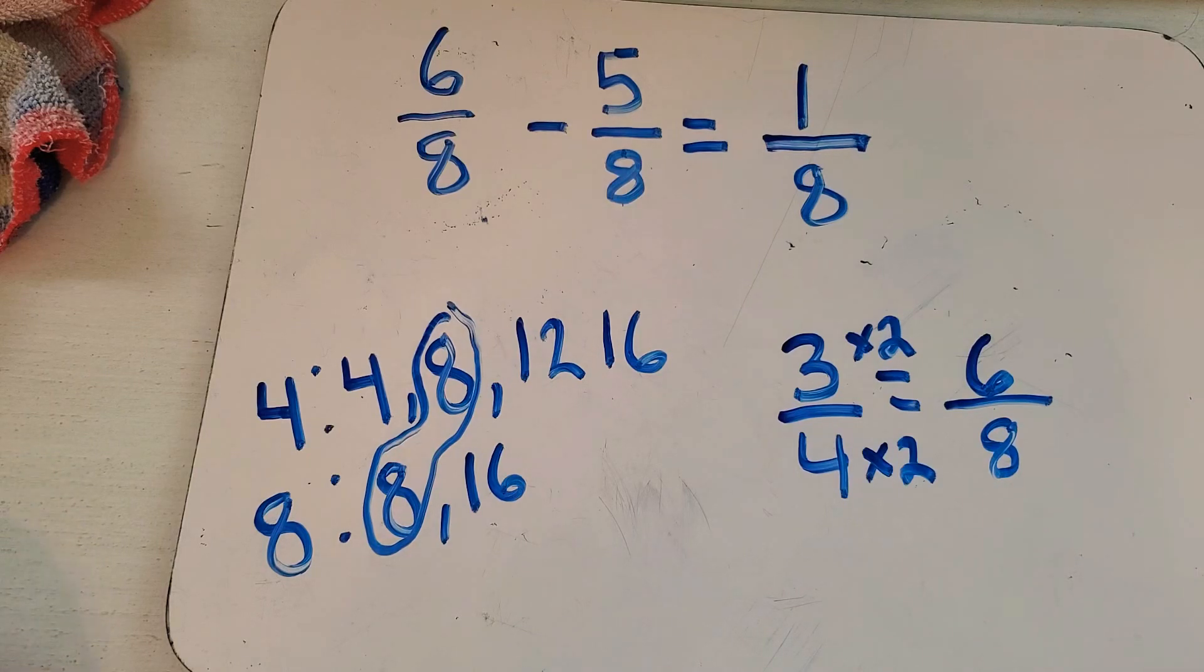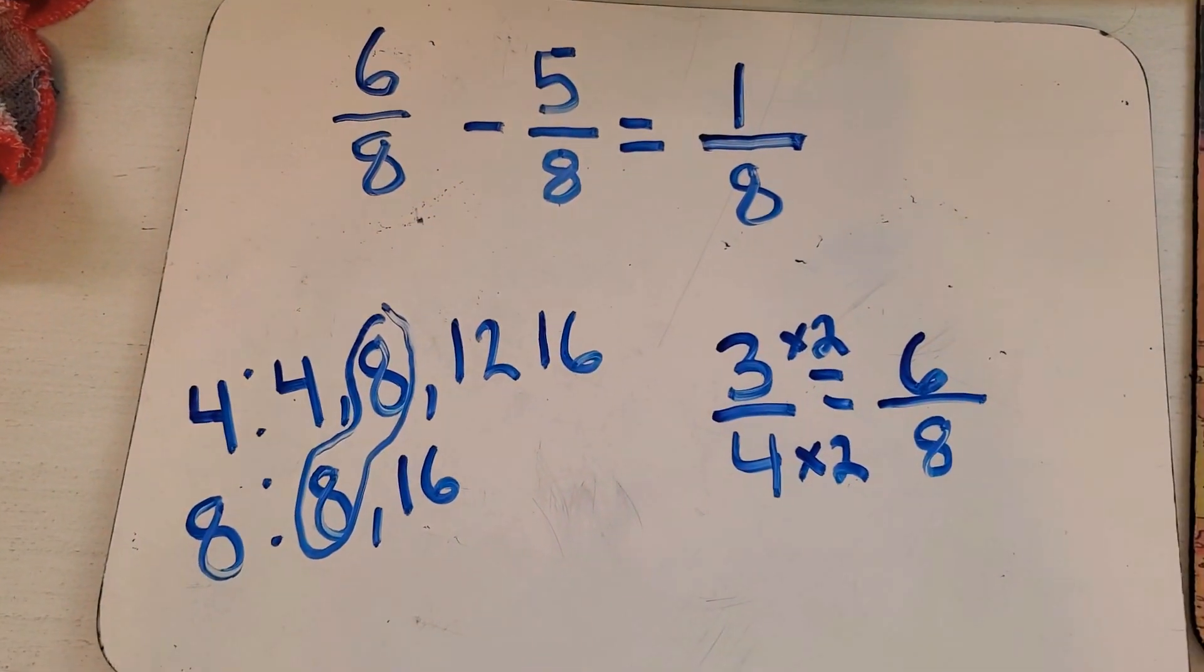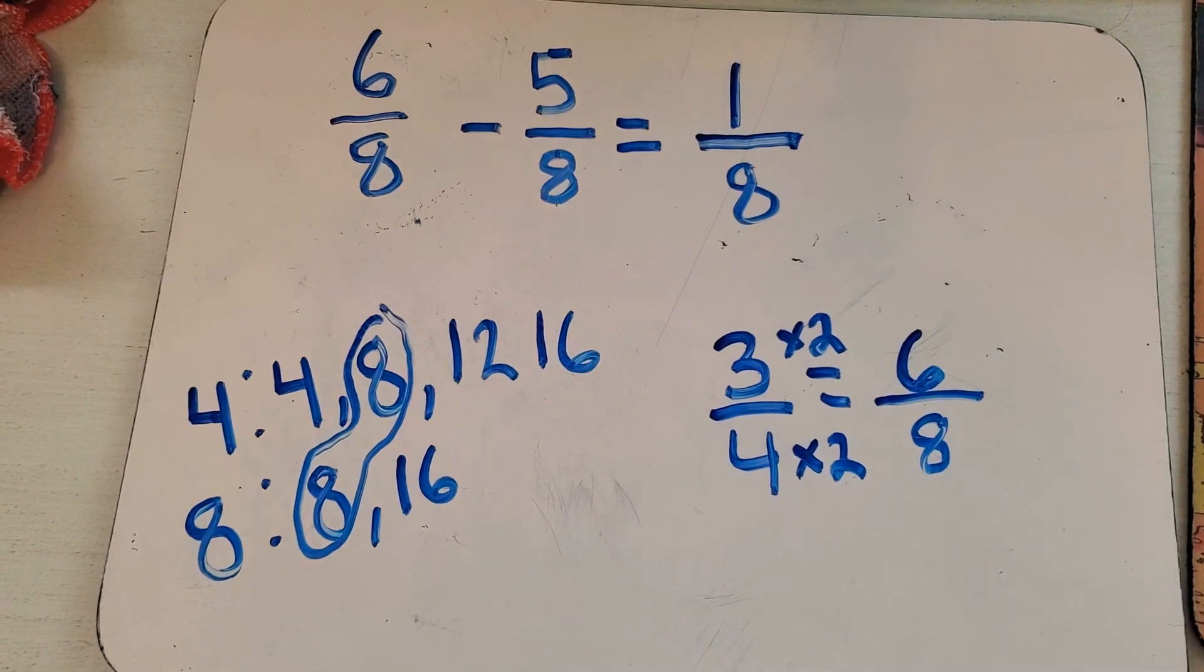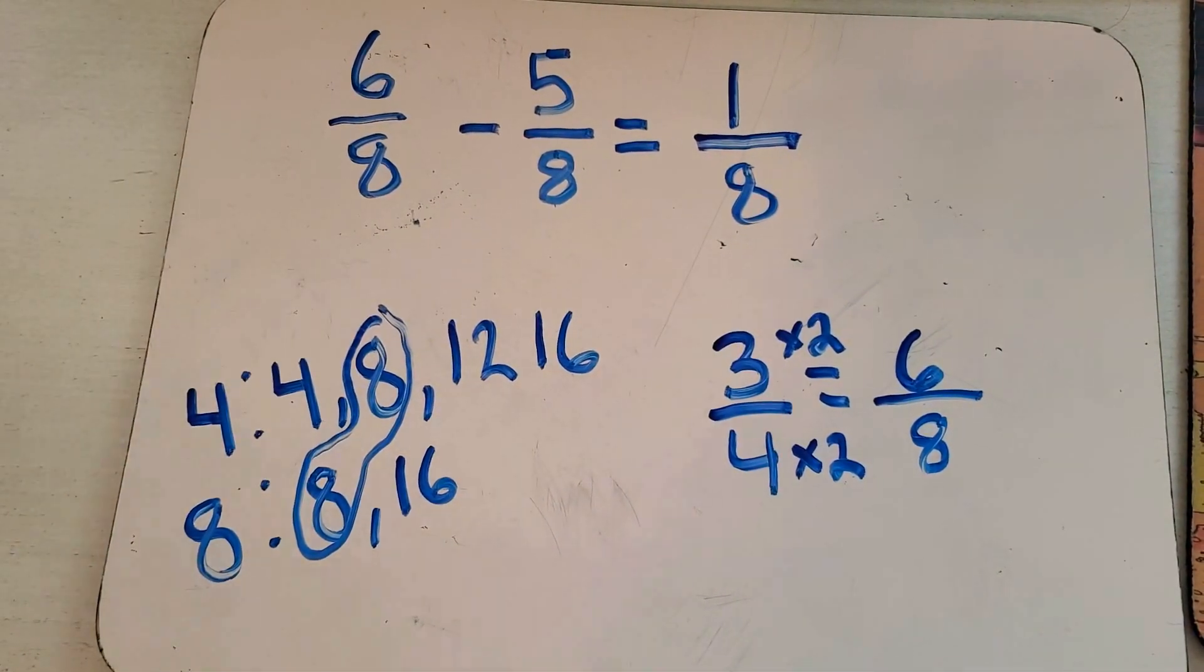I just changed it to where we can have something that we can easily subtract, because remember the denominator at the bottom does not change. So hopefully that helps you out with this - just finding the least common multiple and knowing your multiplication facts is all you really need to do. If you got any questions, please let me know.